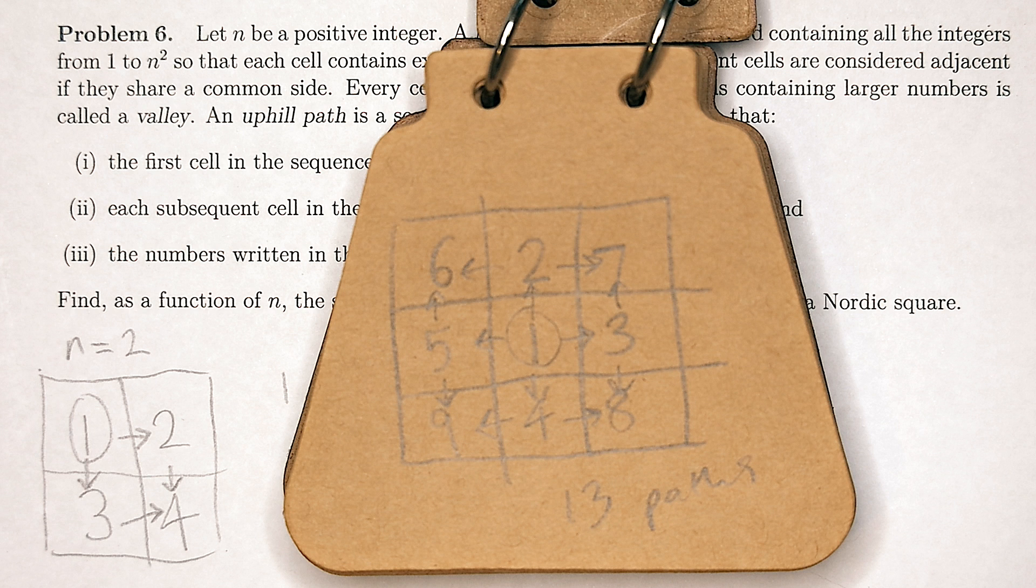You can easily find other 3 by 3 arrangements that have more paths than this, and the crux of the solution comes down from recognizing two things. One is that for the minimum number of paths, you want there to be only one valley, like we have here, our number 1.